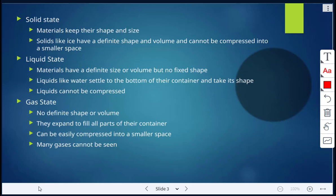We're going to look at the three states of matter. In a solid state, materials keep their shape and size. Solids, like ice, have a definite shape and volume, and they cannot be compressed into a smaller space.